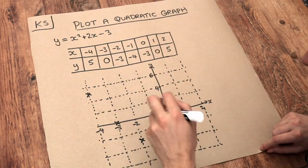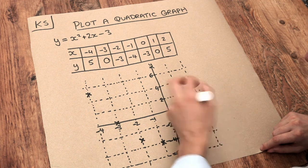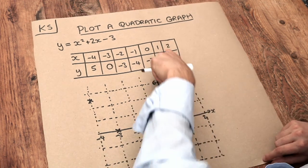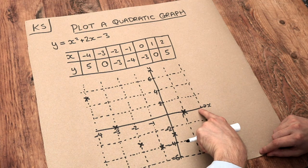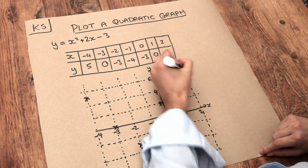When x is 1, y is 0. x is 1, y is 0. And finally when x is 2, y is 5. So we want to plot 2, 5. 2, 5. It's going to be here.